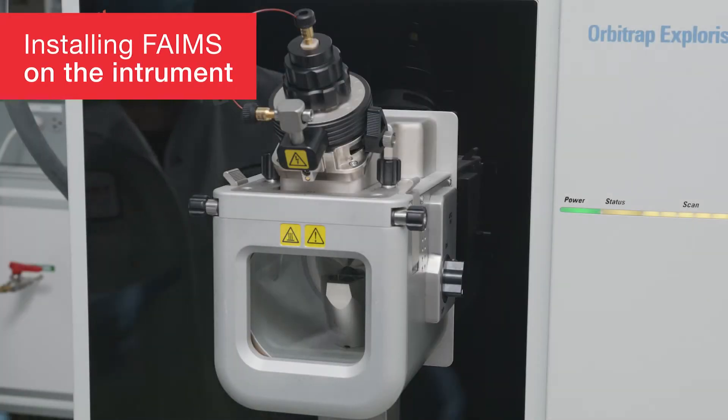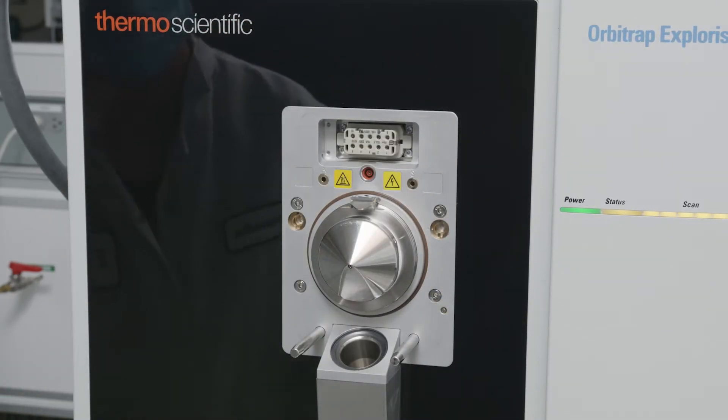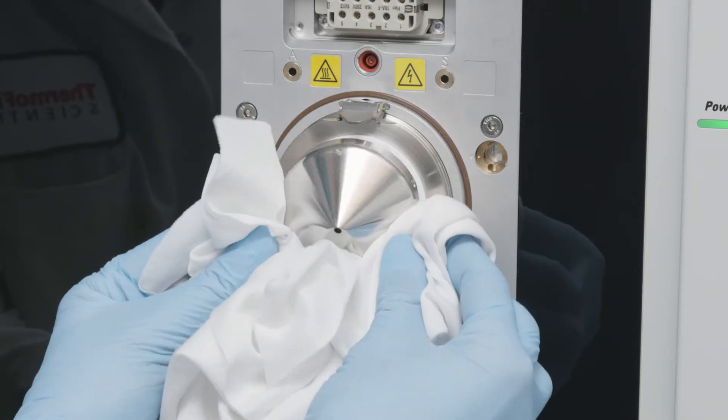To install FAIMS on your MS instrument, first remove the ion source. Next, remove the sweep cone.